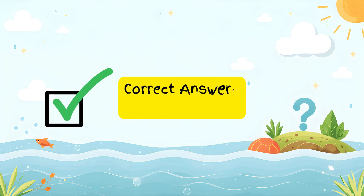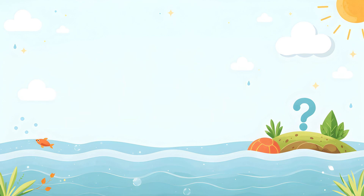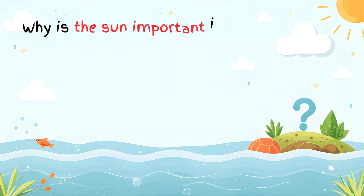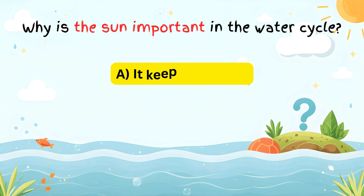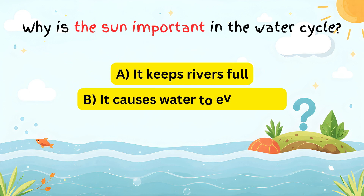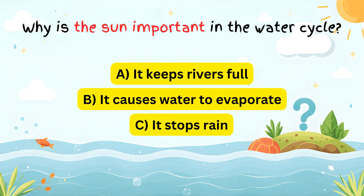Correct answer: condensation. The sun's heat is essential for the water cycle because it causes evaporation, helping water move up into the sky. Why is the sun important in the water cycle? A) It keeps rivers full. B) It causes water to evaporate. C) It stops rain. D) It freezes water.